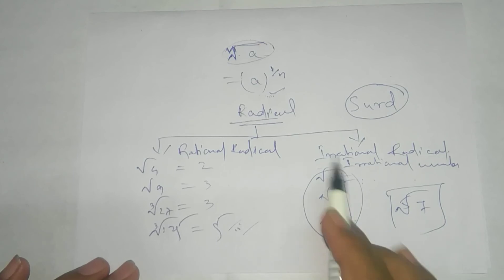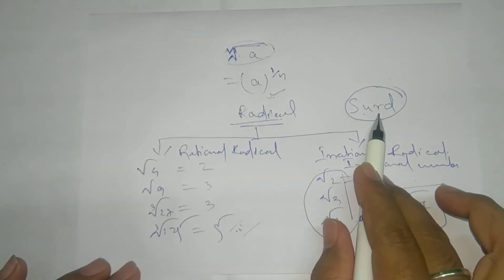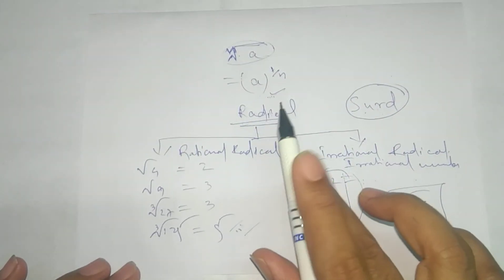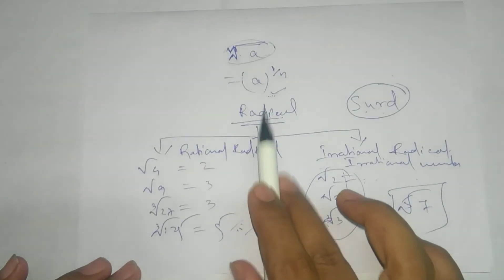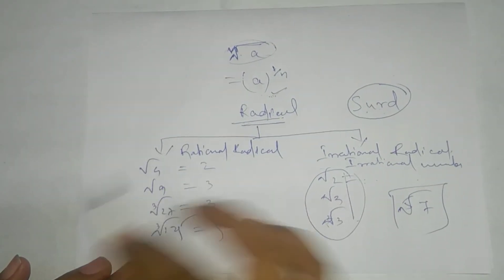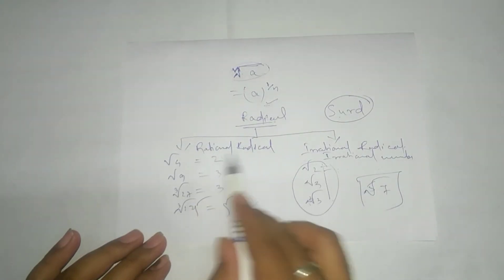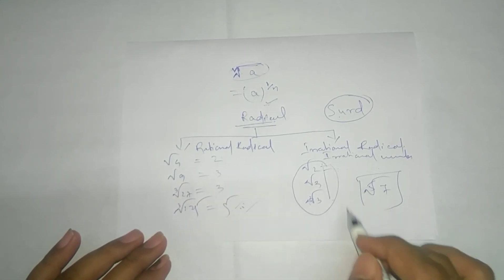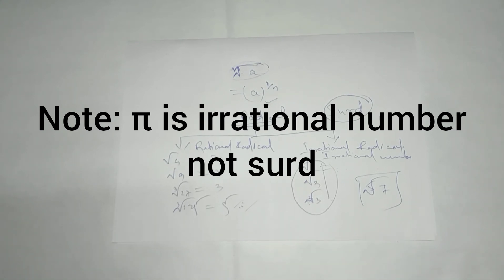Remember, many students get confused between these two. They are thinking both the same. Yes. If it is SIRD, then it must be radical. But if it is radical, then it must not be SIRD. Why? Because radical means, whatever numbers come under this symbol, we call a radical. If this gives you rational number after solving, then it is not your SIRD. So, this one we call a SIRD. I hope it is clear to you. Thank you.